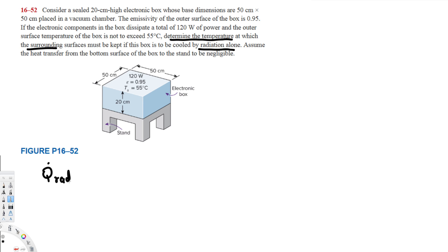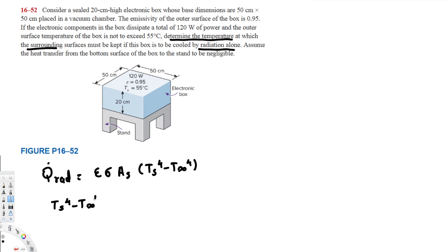Q-dot radiation is equal to emissivity times sigma times surface area times T_surface to the power 4 minus T_surrounding to the power 4. The question is asking for T_surrounding, so let's rearrange this equation: T_surface to the power 4 minus T_surrounding to the power 4 is equal to Q-dot radiation over emissivity times sigma times A_s.